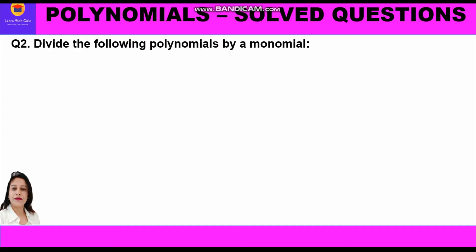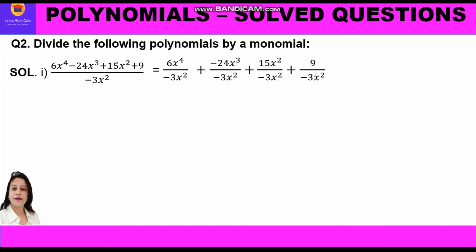Now the second question: divide the following polynomials by a monomial. The first part is (6x⁴ - 24x³ + 15x² + 9) divided by -3x². This polynomial has four terms, so each term is split and divided separately by -3x², giving: 6x⁴/(-3x²) + (-24x³)/(-3x²) + 15x²/(-3x²) + 9/(-3x²).